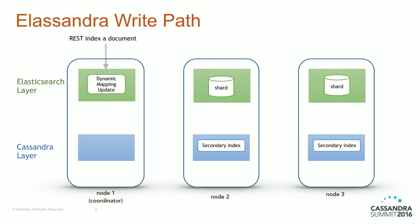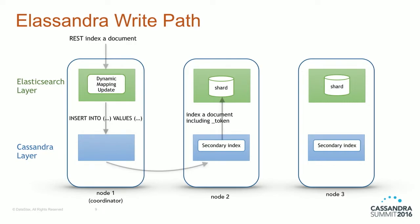On the write path: when you use the Elasticsearch REST API, you send a document to the Elasticsearch layer. First it checks whether a mapping update is needed. Then it writes into Cassandra with a CQL insert, converting the JSON document to a Cassandra row. This row is sent to replica nodes, and on each replica node the secondary index places the document inside a shard in the Elasticsearch layer. We include a token number — the Cassandra token ring token — computed for every document and stored with it.